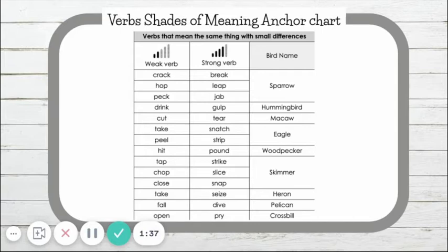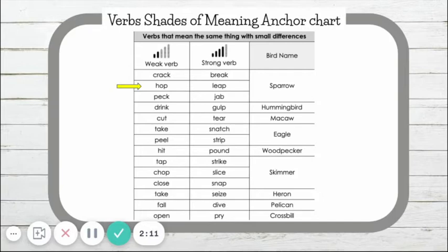Let's practice reading and understanding verbs by doing a little verb game. Stand up wherever you are. Once you see the arrow on my screen, try to act out that verb. Let's start with the verb hop or leap — a sparrow can hop or leap. Show me how you would act out these verbs.